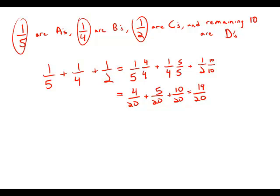So, when we're talking about the A's, B's, and C's, that is nineteen-twentieths of the class. That means that the D's, the remaining D's, must be one-twentieth of the class. Well, if one-twentieth of the entire class equals ten people, then this means that there are two hundred people in the class. And this is answer choice D.